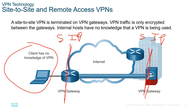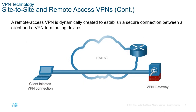We also have the ability to do a remote access VPN. This dynamically creates and establishes a secure connection between the end device and our gateway. The end device will call out to the VPN gateway. This end device may have a dynamic address and can be connecting from anywhere on the internet, so the end device initiates the call-out, the VPN gateway receives the connection, and then the connection is established.